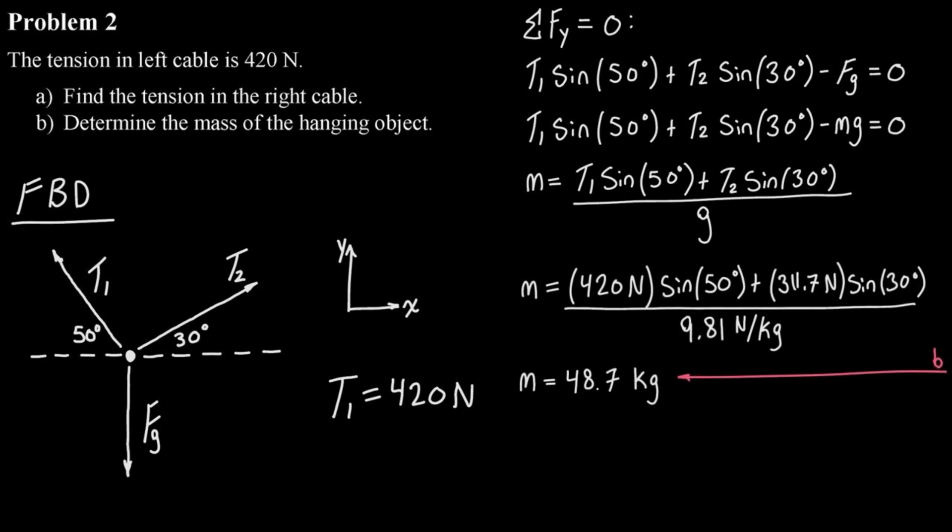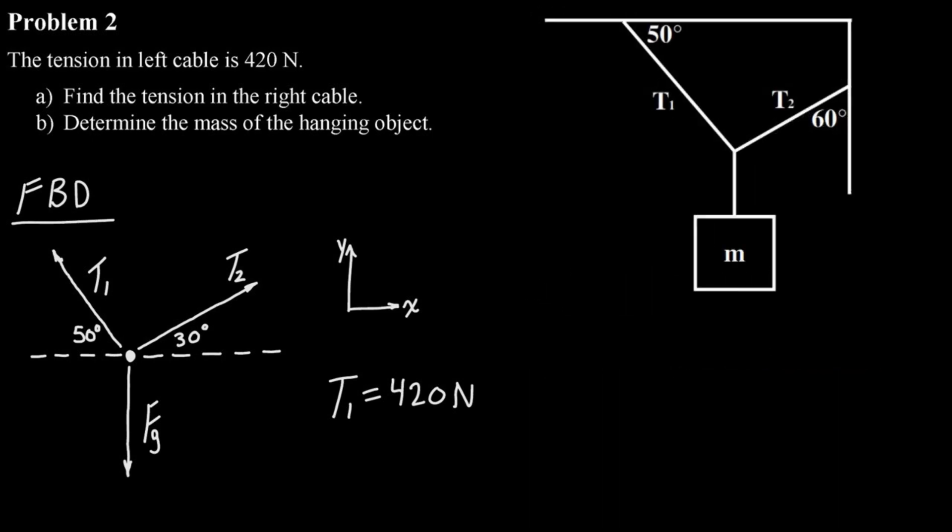So let's recap what we did here. For any static equilibrium problem, we're going to want to start with a free body diagram. Once we have our free body diagram, then we have to think about which equation we want to use first. Do we want to use sum of forces in the x direction equal to zero, or sum of forces in the y direction equal to zero?